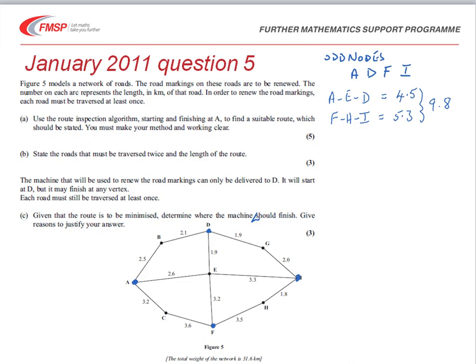We do a similar thing for each of the other pairs. A to F, which is in fact via E, is 5.8. And then D to I via G is 3.9, giving a total of 9.7.